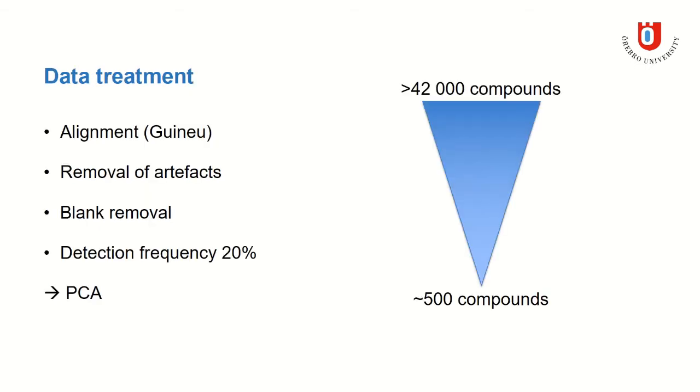All samples were then aligned in the software GINI, and the first step was to remove artifacts, and those are compounds that only appear in one out of the three replicates. After that, I removed compounds that had high concentrations in the blanks and applied a detection frequency threshold of 20%. So, I started with more than 42,000 compounds and ended up with around 500 compounds, and those 500 compounds were then subjected to principal component analysis, PCA, using centered, scaled, and log-transformed data.